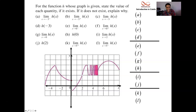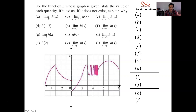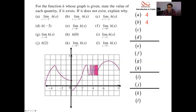Let's start looking at x equals negative 3. At x equals negative 3, the first question, letter A, says what's going on from the left-hand side? The little minus sign in the superscript position means you're approaching only from the left. From the left, this function is approaching 4. From the right — a plus sign in that superscript position means from the right — you're also approaching 4.